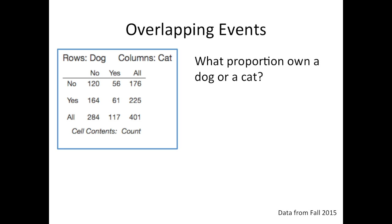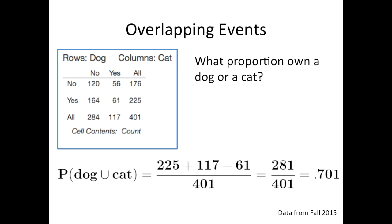Let's look at an example using a contingency table. This is a contingency table made in Minitab Express that shows the number of students from Fall 2015 who owned a dog and owned a cat. There are two different ways to solve this. First, looking at the numbers on the contingency table: there are 225 people who own a dog and 117 people who own a cat. But if we add those together, the people who own both — 61 individuals — would get counted twice. So we take 225 plus 117 minus 61, all divided by 401, which gives us 0.701. So 70.1% of this sample owns a dog or a cat.